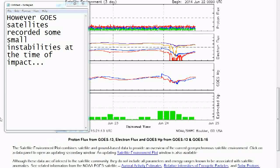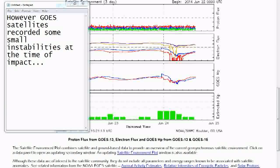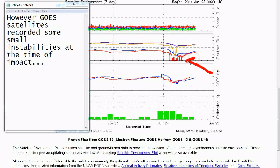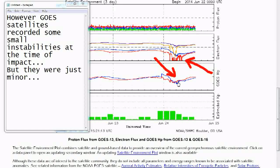However, GOES satellites recorded some small instabilities at the time of impact. But they were just minor.